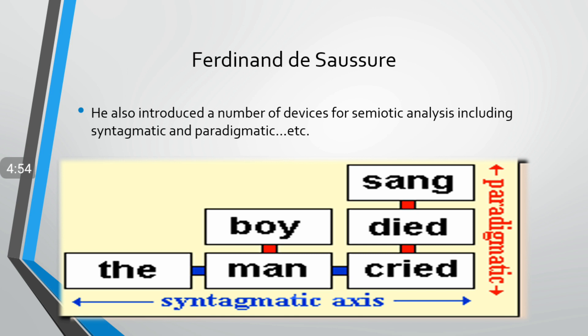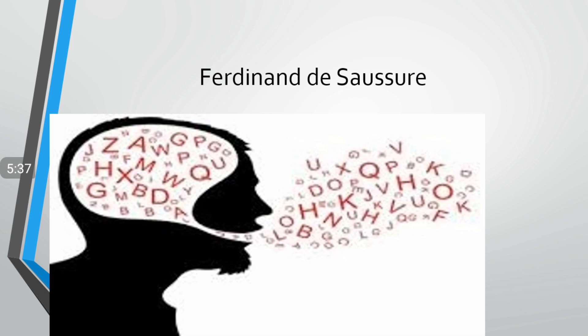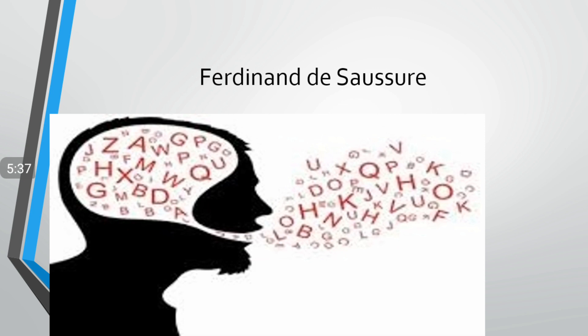Then the question is: how can I generate new sentences? The answer is paradigmatics — I can substitute words. For example, I can substitute 'boy' with 'man,' 'died' with 'cried,' or 'sang' with 'cried.' It means that I can substitute words to generate new sentences, but I need to follow a certain structure and a certain set of rules. Language is a fixed system of units which are interconnected, and in this way we can generate new sentences, communicate in our society, and get the function of language.